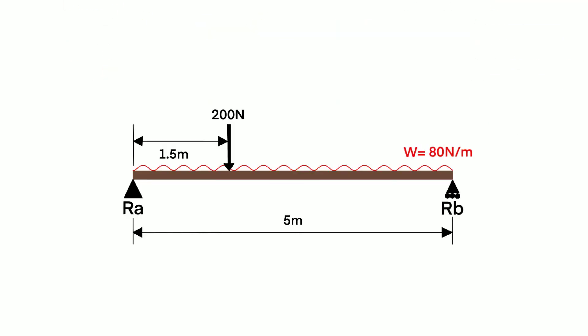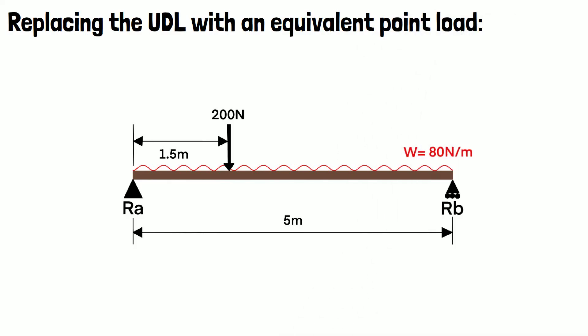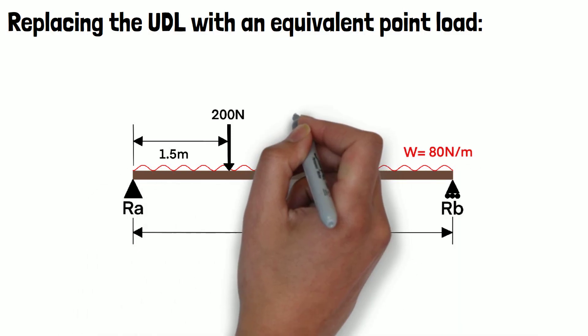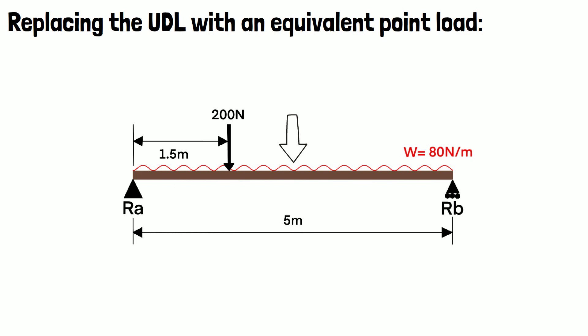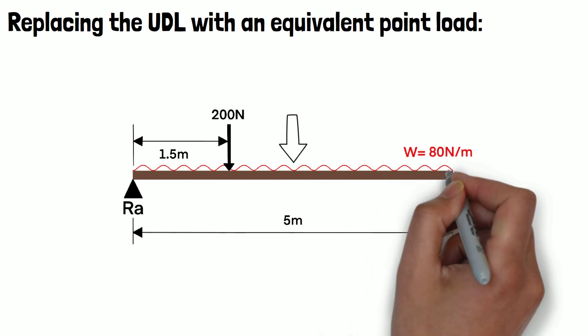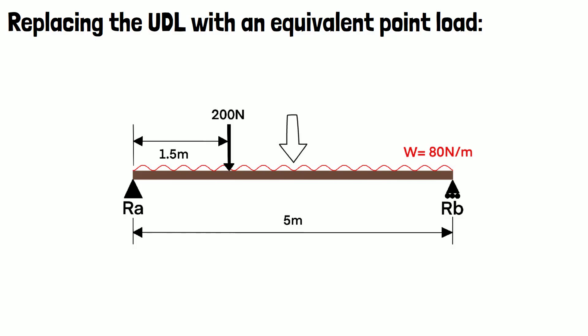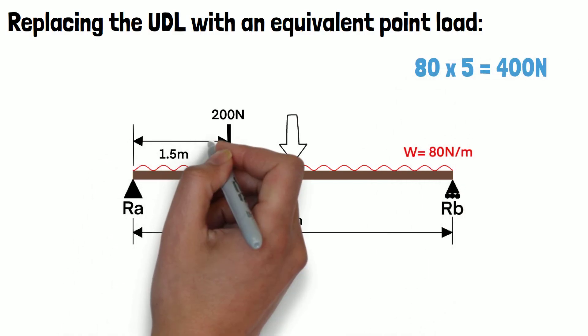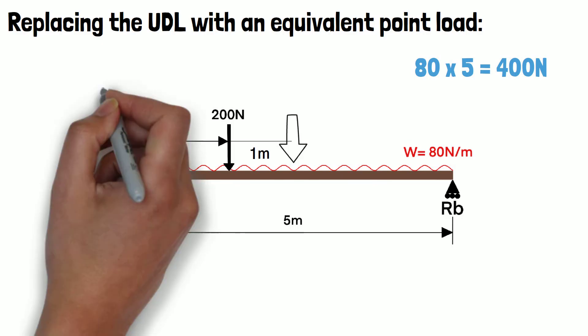To simplify the problem, we can replace the UDL with an equivalent point load. The magnitude of the equivalent point load for a UDL like this one is equal to the area under the distribution and is located at the center of the distribution. In this case, we have an 80N per meter load applied over 5 meters. So the equivalent point load would have a magnitude of 400N and would be located at the 2.5 meter point.